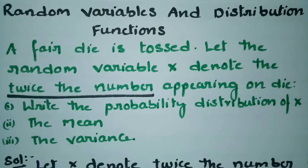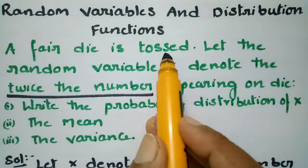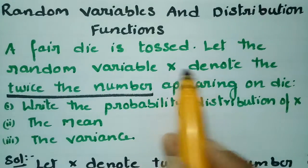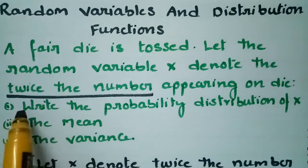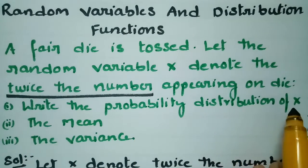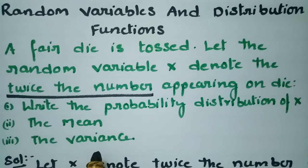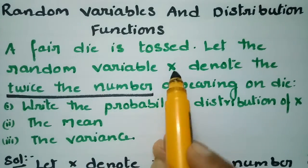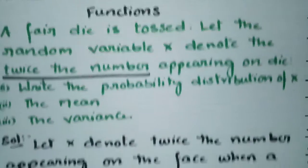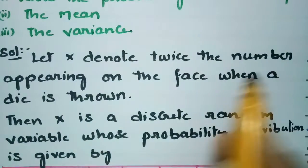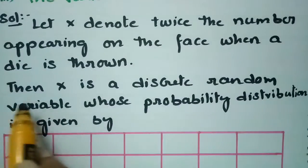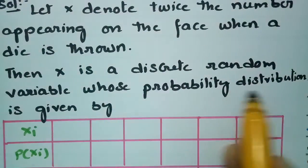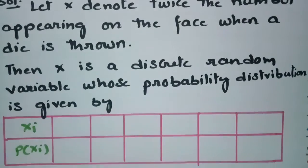This video covers an important problem on random variables and distribution functions. A fair die is tossed and the random variable X denotes twice the number appearing on the die. We need to write the probability distribution of X, and find the mean and variance. X is a discrete random variable whose probability distribution is given as follows.